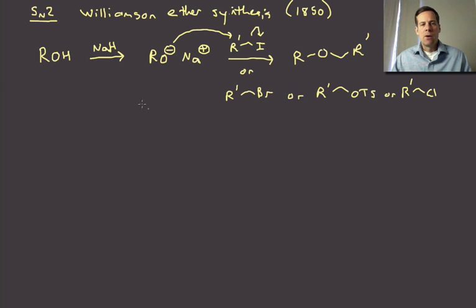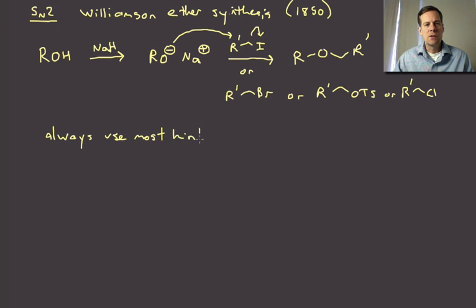And the mechanism, I think, is very straightforward. Now, there's one important point here is that you always want to pick, if you have an unsymmetrical ether that you're forming in this way, you always want to use the most hindered piece of your eventual ether as the alkoxide piece. So most hindered piece as the alkoxide.